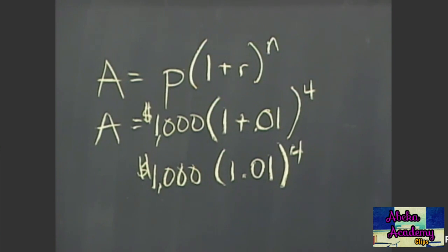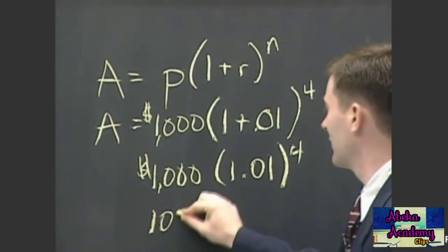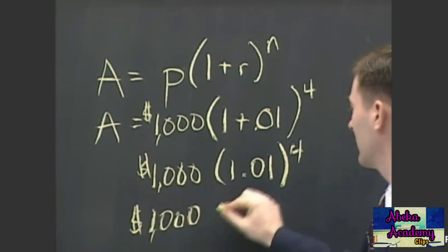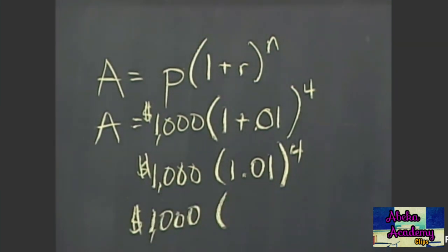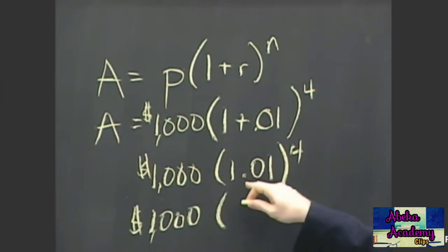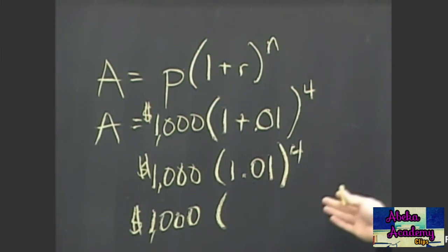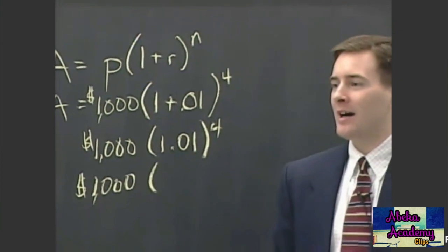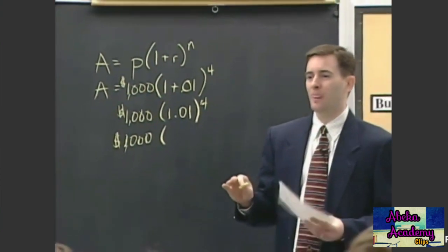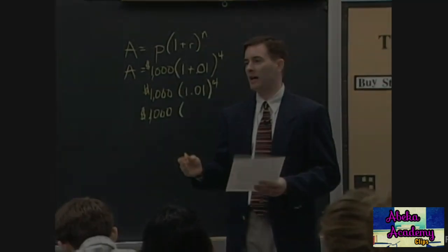And then after, that'd be one thousand times one point zero one again. Okay, well now we've got to go to multiplying one point zero one times itself four times. So go ahead and do that on your calculators, and we mentioned this yesterday...